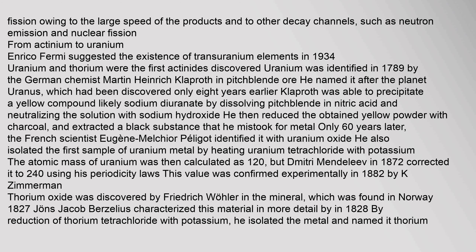This non-observation was attributed to spontaneous fission owing to the large speed of the products, and to other decay channels such as neutron emission and nuclear fission. Uranium and thorium were the first actinides discovered. Uranium was identified in 1789 by the German chemist Martin Heinrich Klaproth in pitchblende. He named it after the planet Uranus, which had been discovered only eight years earlier. Klaproth precipitated a yellow compound — likely sodium diuranate — by dissolving pitchblende in nitric acid and neutralizing the solution with sodium hydroxide, then reduced the yellow powder with charcoal.